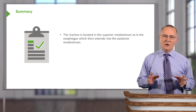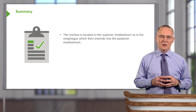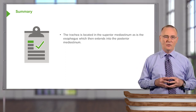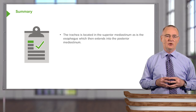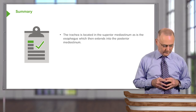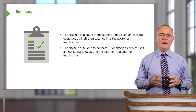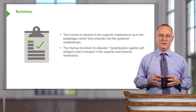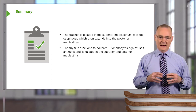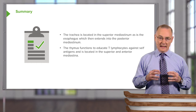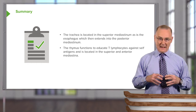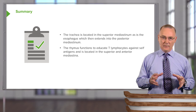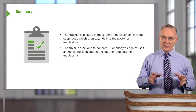The trachea is located in the superior mediastinum, as is the esophagus, and the esophagus will extend into the posterior mediastinum. The thymus functions to educate T lymphocytes against self-antigens and is located at its maximum development in the anterior and superior mediastinum.